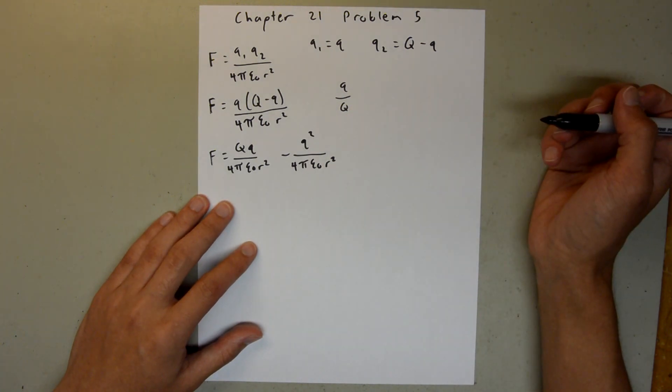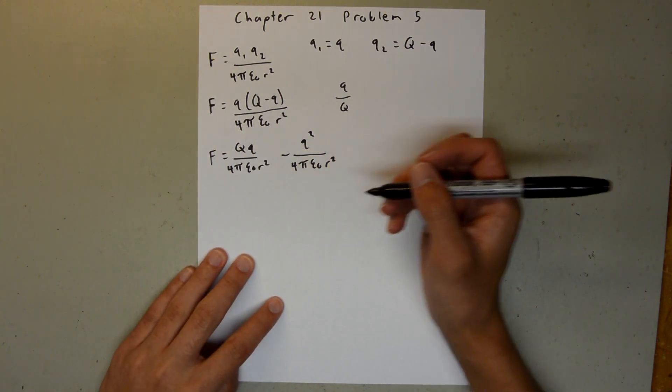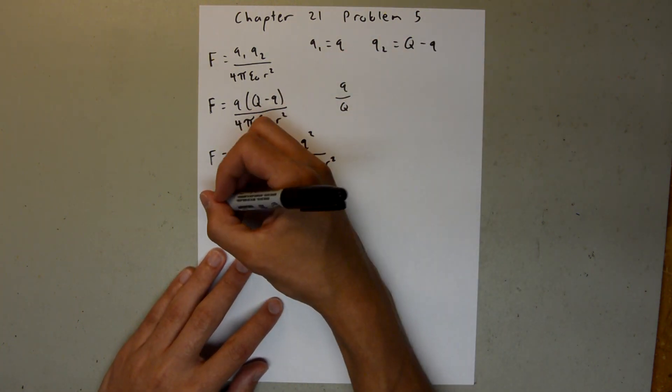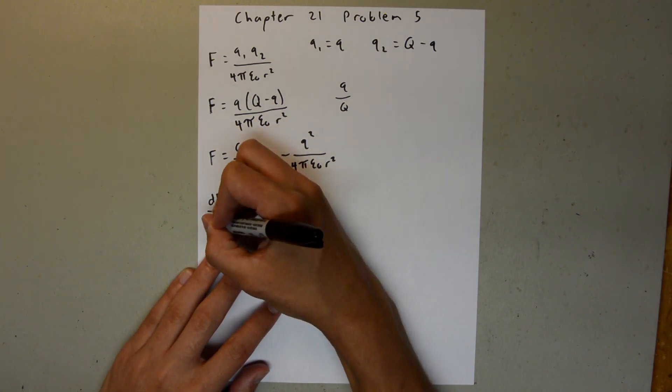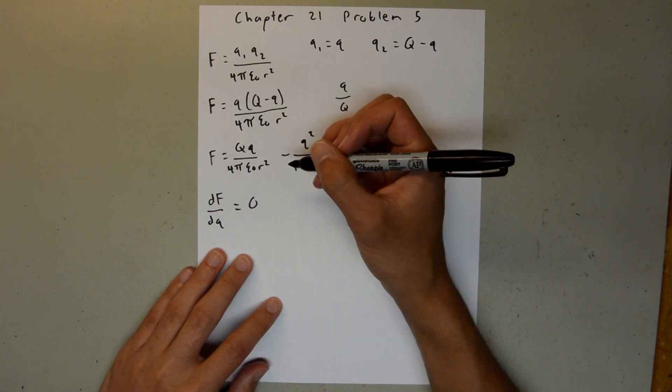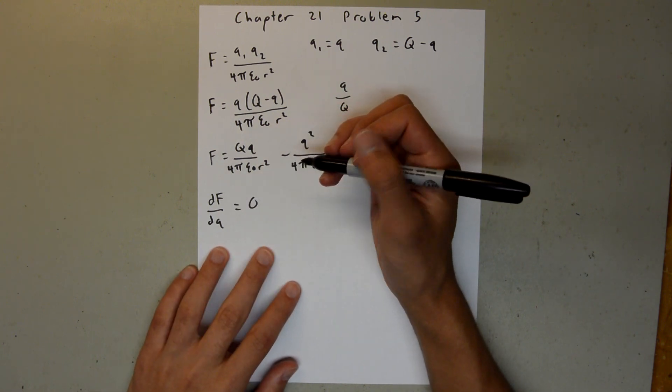And since we're trying to find where the electrostatic force is maximized, we need to take a derivative. So, we're going to take that derivative with respect to little q. So, we can say, dF/dq. And we're going to want that to be equal to 0. To find a maximum, you need to take the derivative and set that equal to 0.